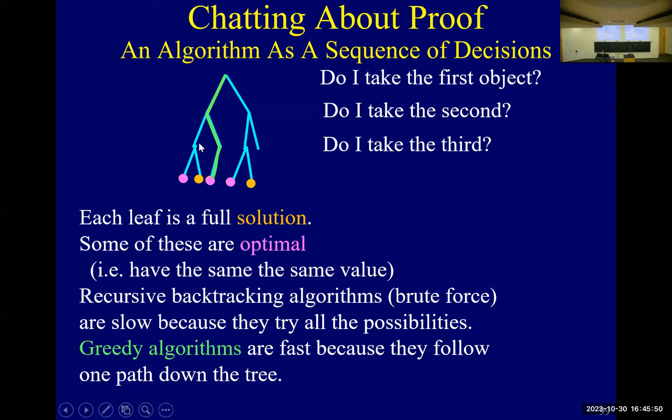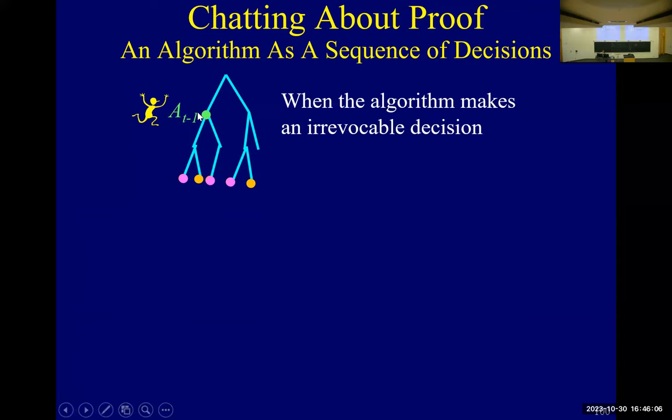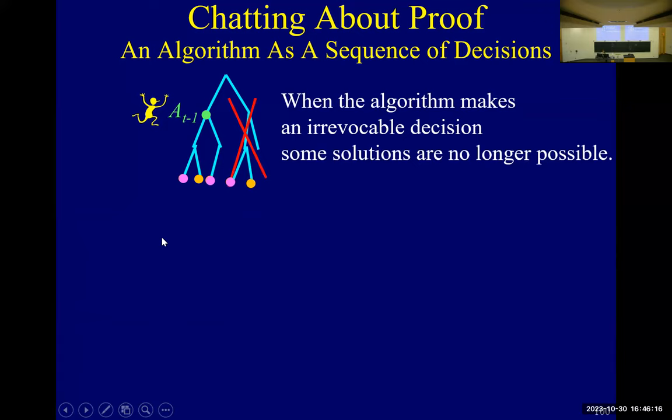But what does the greedy algorithm do? It just makes the greedy choice each time, so it goes down one path of this tree. Suppose the algorithm is sitting here — it made this greedy choice and hasn't considered things in the future. So this part of the tree has been burned; all these solutions are not possible because we're only considering things consistent with what the algorithm has done so far.